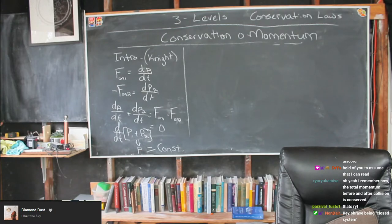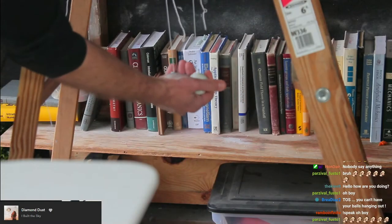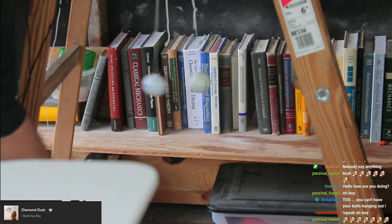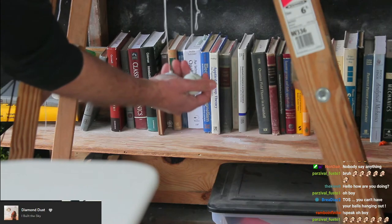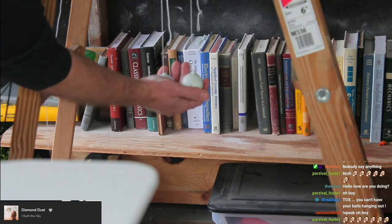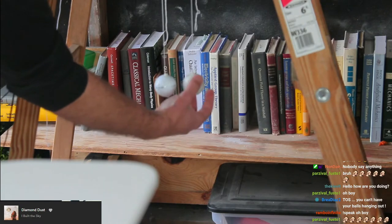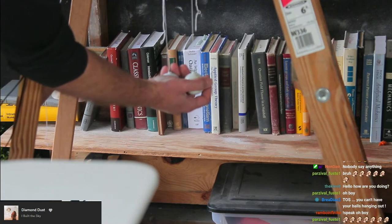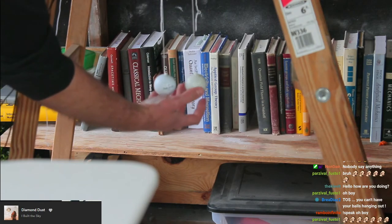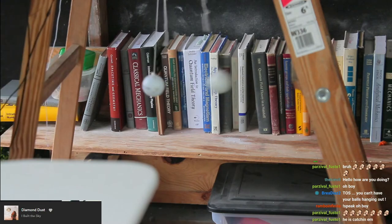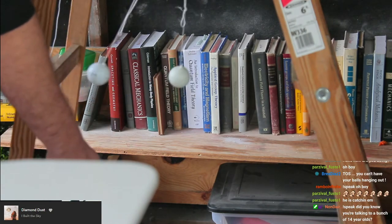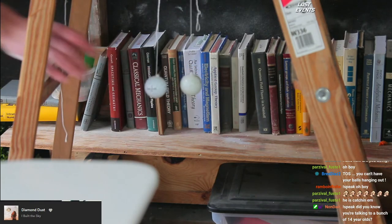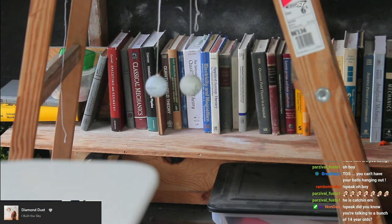Let's look at a demonstration. I have two pendulums — golf balls of the same mass. When I release one, it transfers its momentum to the other. Because they're the same mass, it essentially transfers all of its velocity to the other ball. They go back and forth — the momentum stays the same.